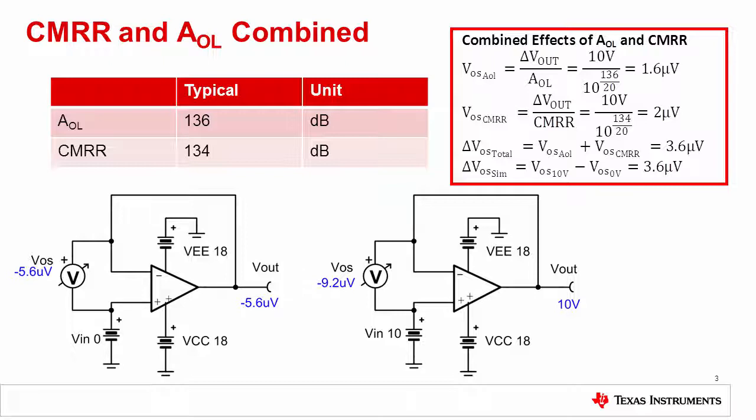The shift in output voltage introduces an error reflected to the input from the open loop gain, or AOL. For this example, dividing the output voltage change of 10 volts by the open loop gain yields an offset voltage shift of 1.6 microvolts.